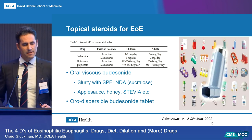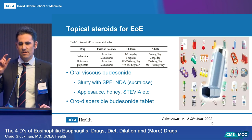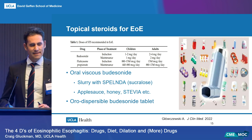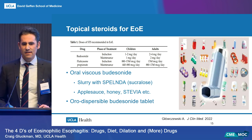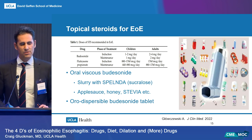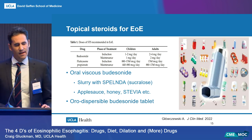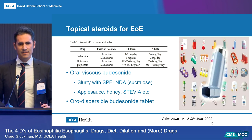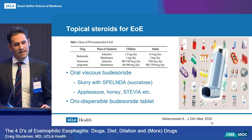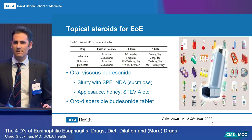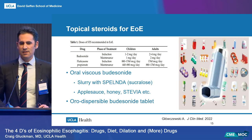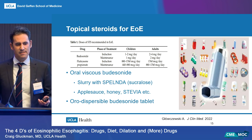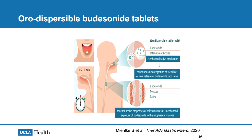Oral viscous budesonide is an asthma respule that the patient converts into a slurry by adding a mixing medium - most of the data is on Splenda, a sucralose-based slurry. The patient essentially makes a lotion they can swallow to coat the esophagus, taken twice a day. Other mediums recommended include applesauce, honey, and stevia. An oral-dispersible budesonide tablet and a pre-compounded oral budesonide slurry are available in Canada and Europe but not yet in the United States. The tablet mixes with saliva within one to two minutes and coats the esophageal mucosa.